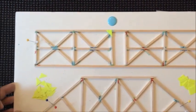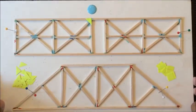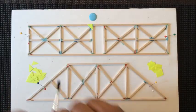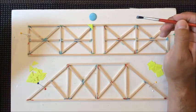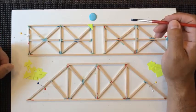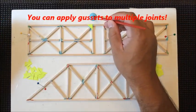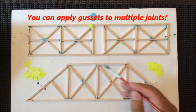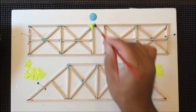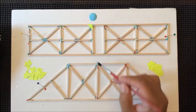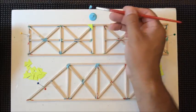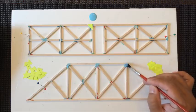Now I'll show you how you can do multiple joints at a time. Putting on one gusset at a time is very time-consuming. What you can do is apply glue over the top of all three joints at the same time. The glue will not dry that fast, so we can put our gussets on and make them effective.